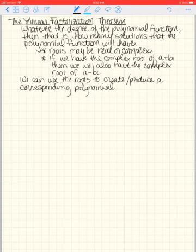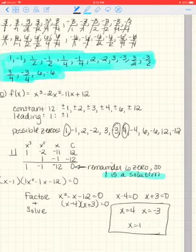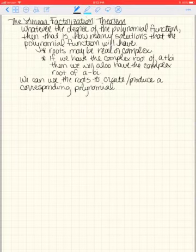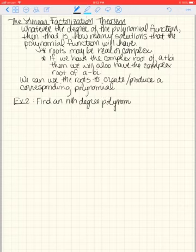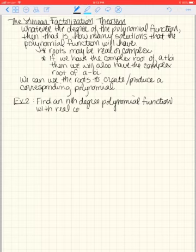So let's look at, let's see, where are we at? We are on 25. So we're going to call this example two because I think I rolled all those into example one. So let's look at example two. And this does start with number 25. It says find an nth degree polynomial function with real coefficients satisfying the given conditions.